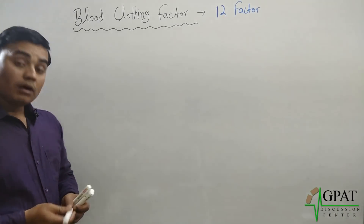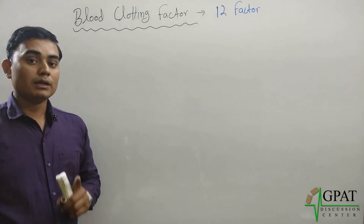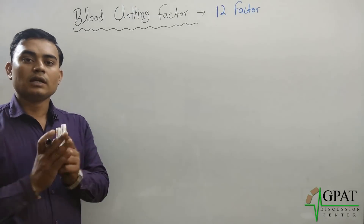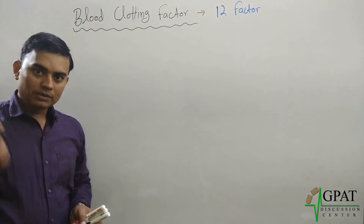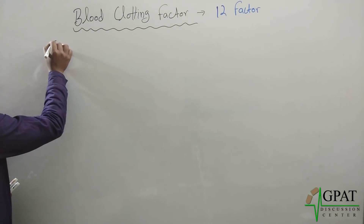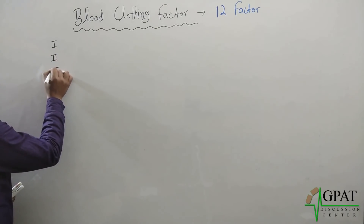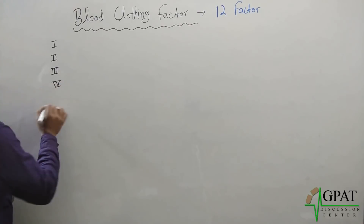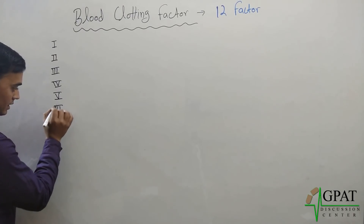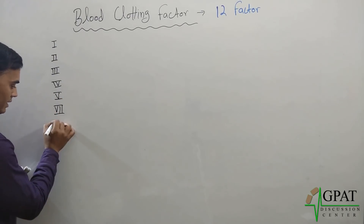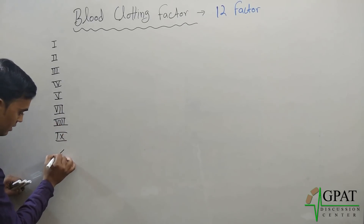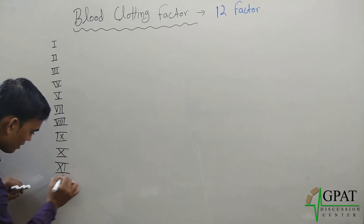First, keep in mind there are 12 factors total, but the numbering goes up to 13 because factor number 6 does not exist in the sequence. So the sequence is: 1, 2, 3, 4, 5 — then 6 is not there — 7, 8, 9, 10, 11, 12, and 13.